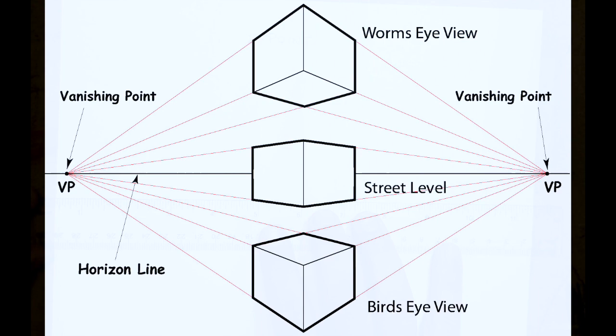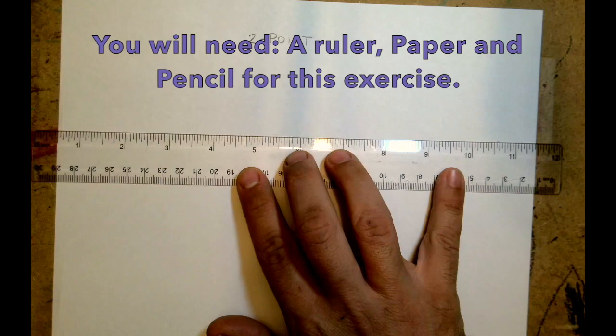Notice how the corner of the cube is what's closest to you. In two-point perspective, we use the corner as the detail for the drawings.